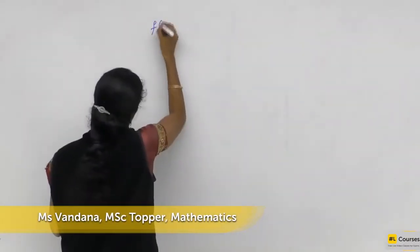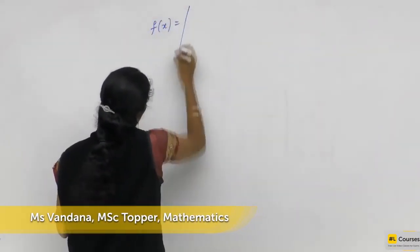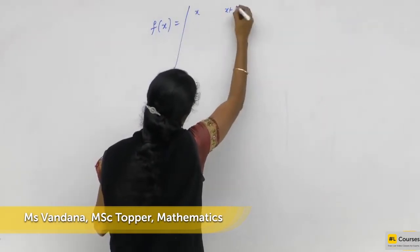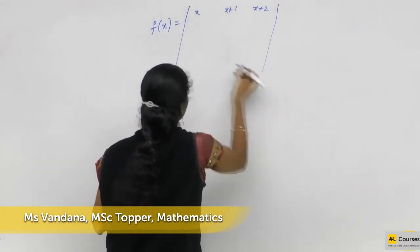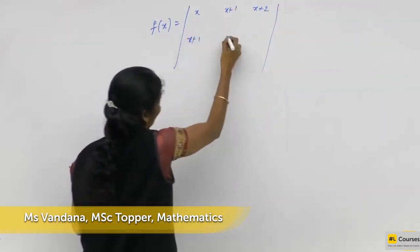You have a function for the determinant like x, x plus 1, something like x kind of things if you have here.